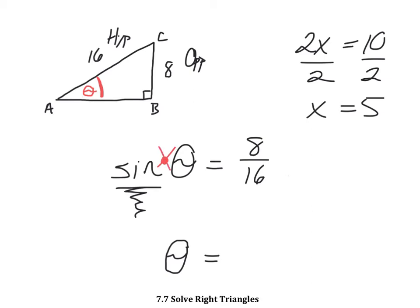Sine is its own separate function. So what I need is an inverse function. A lot like what I did up here. So in order to get rid of the multiplication, I used division.